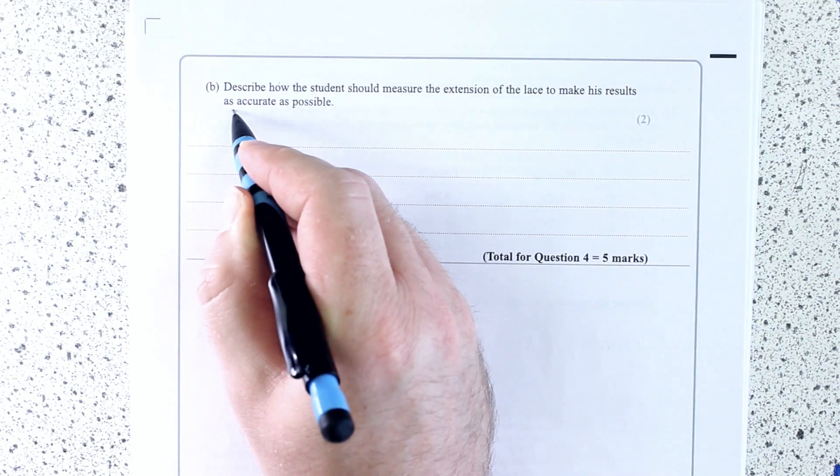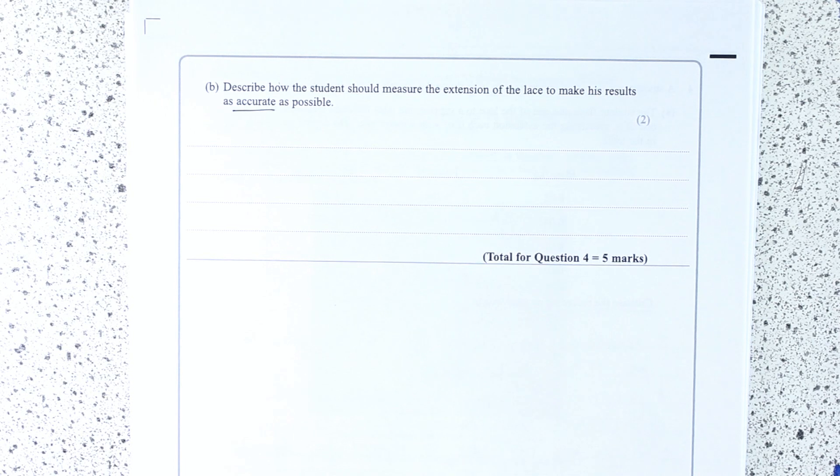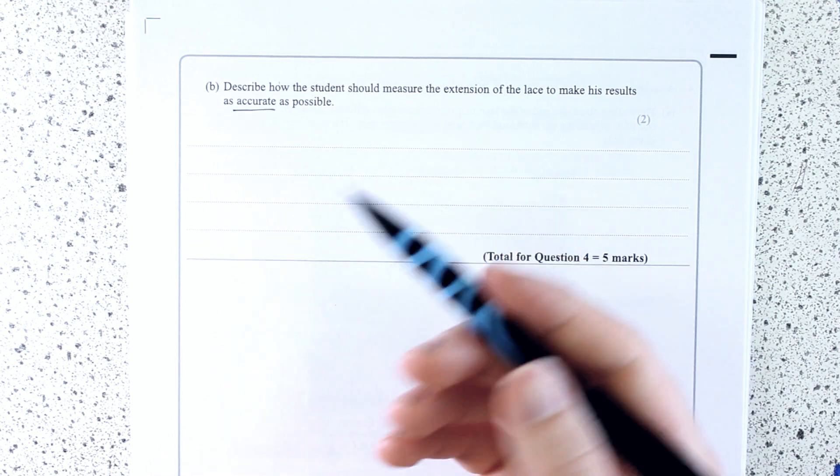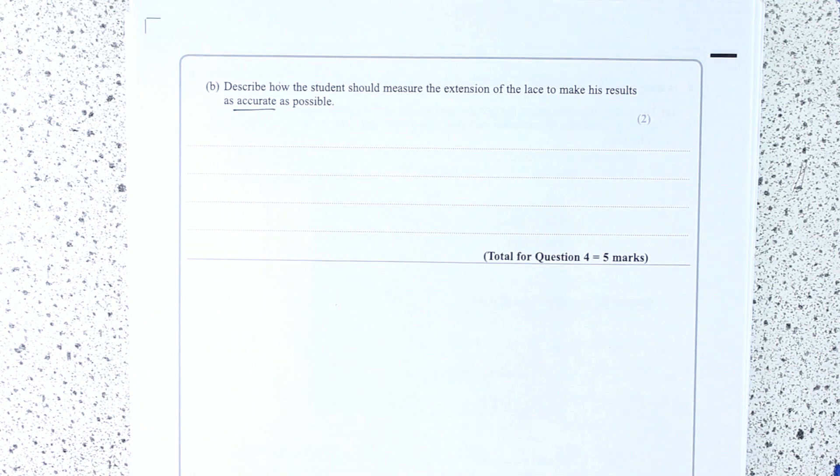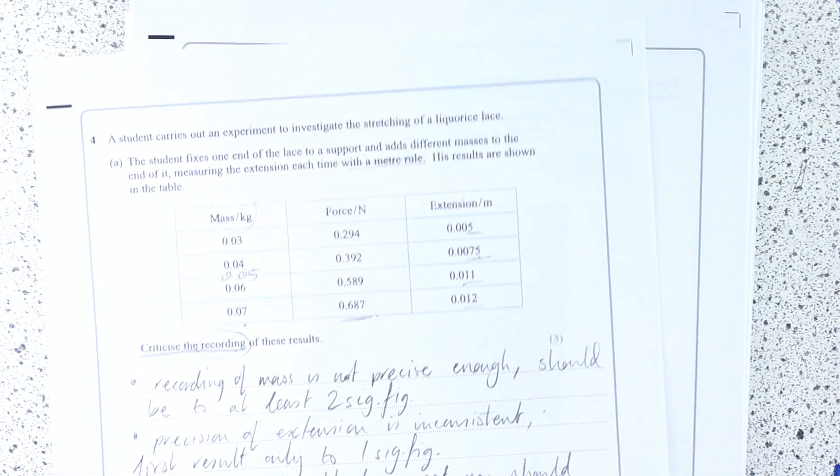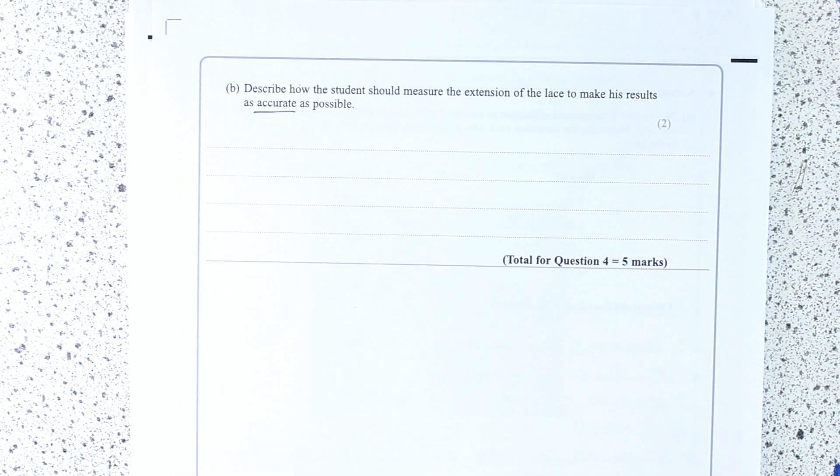So this one is actually asking us about how we should do things accurately. So they've told us the extension should be with a meter ruler. So it's not about actually changing the apparatus. It's not about using, let's say, a vernier scale, although we are in a millimeter kind of range, so it might be a question. With the meter ruler, how should we make it more accurate?